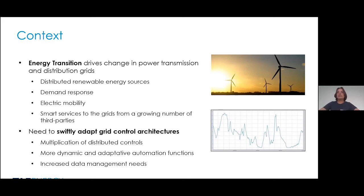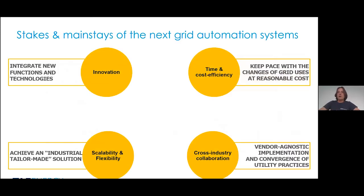Data will play an increasing role. For instance, we are facing an aging infrastructure, and in order to optimize our asset management, we want to rely on more data, applying analytics and new technologies such as AI. In this context, we are thinking about a new generation of grid automation systems, and basically there are four challenges. The first one relates to innovation: we have to integrate new functions and technologies — most of them IT technologies — in order to fulfill the needs of the future.